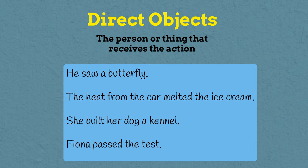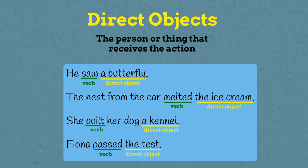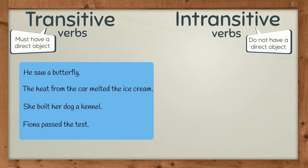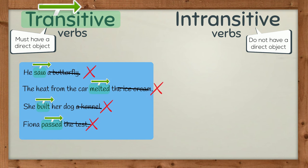Here are some more examples. Here are the verbs and here are the direct objects. Each is receiving the action. In these examples, the action moves from the subject through the verb to the direct object. Each of these verbs is a transitive verb because the action moves, or transits, from the subject to the object. These sentences would be incomplete without the direct object. Transitive verbs must have a direct object to complete the thought.